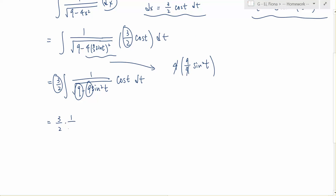And we will get 1 over the square root of 9 times the integral of 1 over the square root of 1 minus sine squared t times cosine t dt.